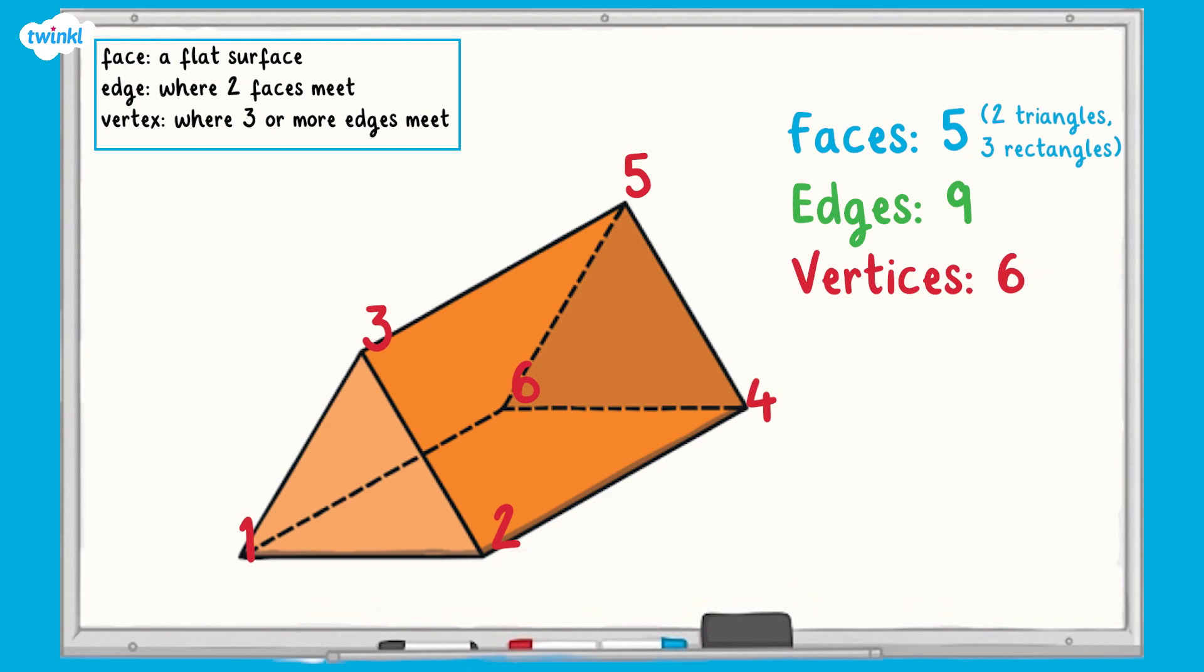If you're using 2D representations of 3D shapes, jottings on the picture can help you to remember which ones you've already counted, and to make sure you count all of the faces, edges and vertices, even if you can't see them in the picture.